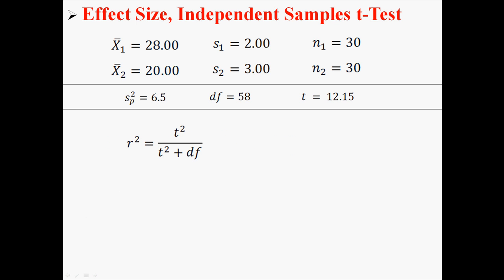Now there's also another way of calculating effect size called r squared. This is the equation for r squared: it's t squared divided by t squared plus the degrees of freedom. If I were to do that using what we already know, I would find an r squared of 0.718.